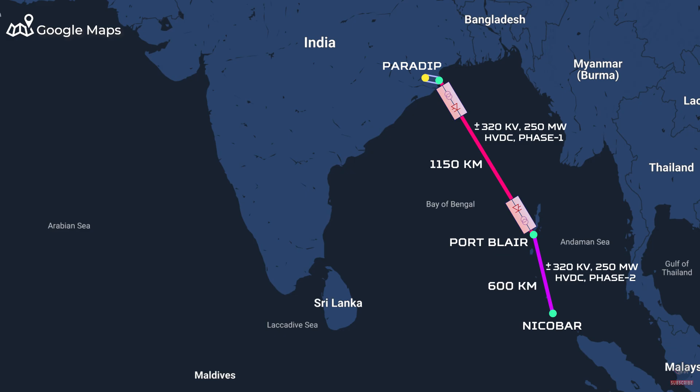It would be approximately 600 km long. But what's the sudden need of increased power demand of the Nicobar Islands? It's primarily because of India's plan to develop a mega transshipment hub at Galathea Bay in the Nicobar Islands.